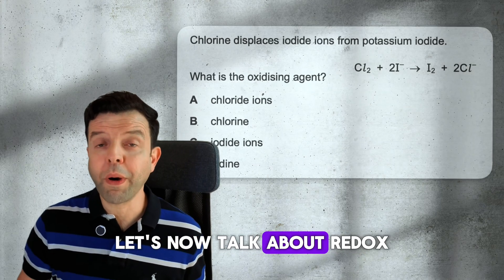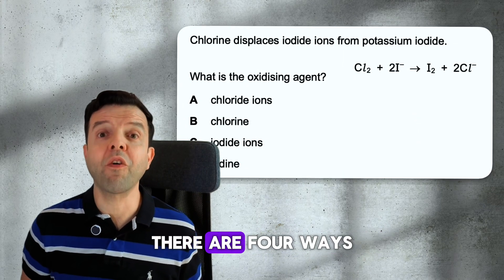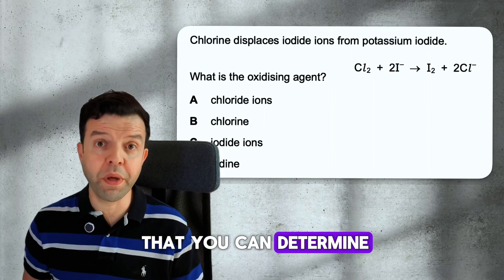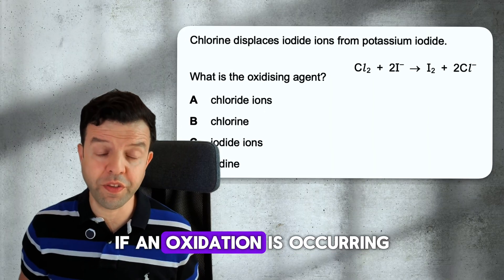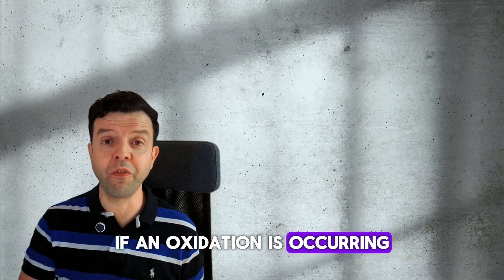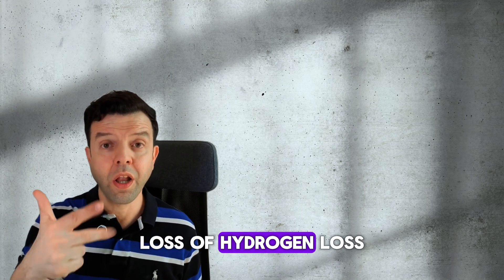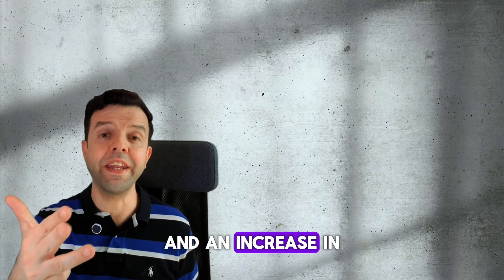Let's now talk about redox. There are four ways to determine if oxidation is occurring: gain of oxygen, loss of hydrogen, loss of electrons, and an increase in oxidation number.